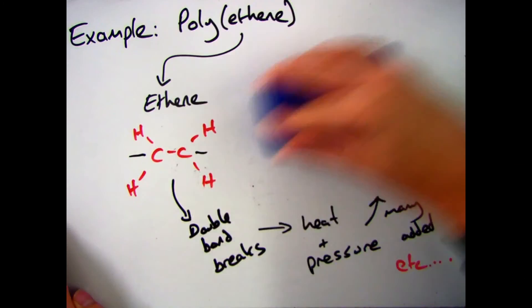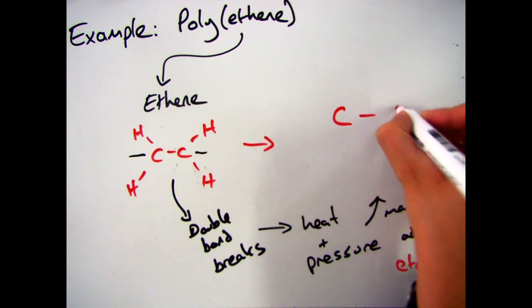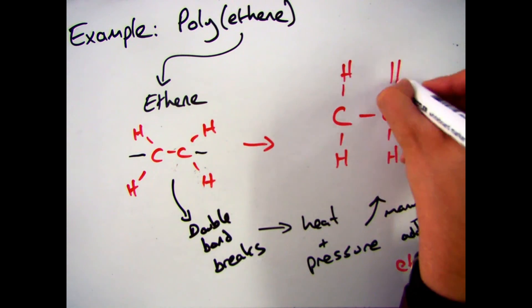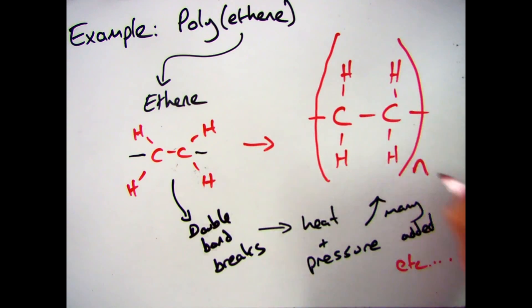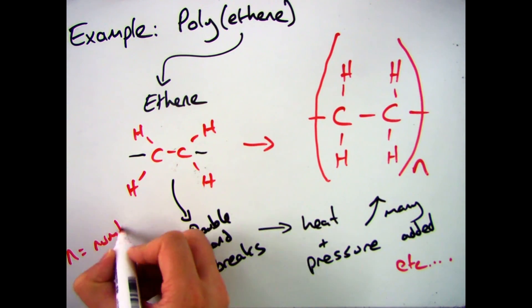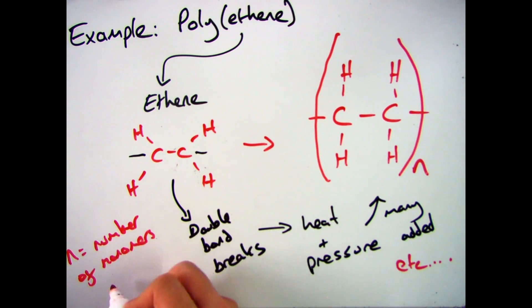And a simplified way of drawing those molecules is to take your ethene molecule, break the double bond and put a bracket around it and then put an N. That N represents the number of molecules in that polyethene chain.